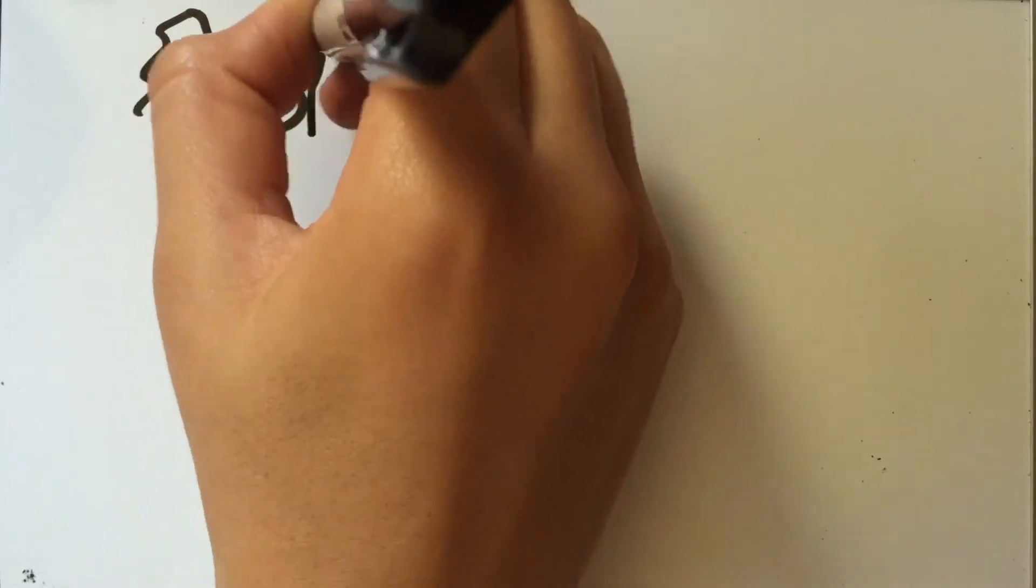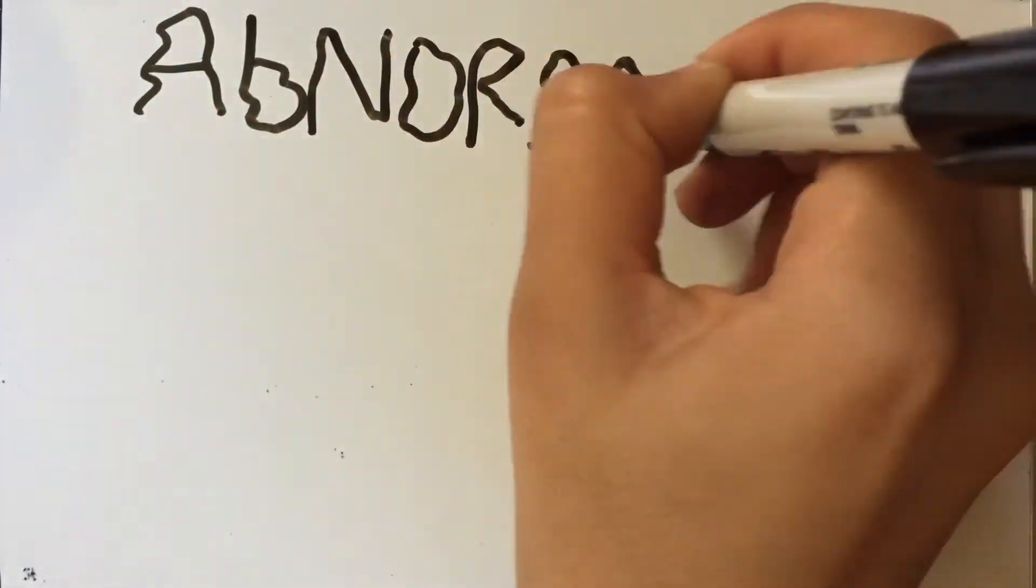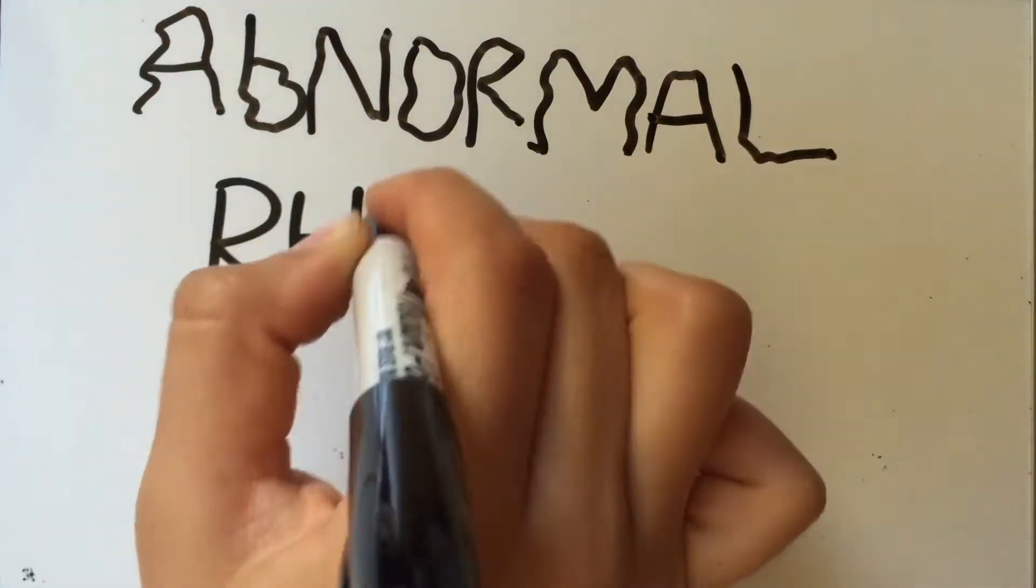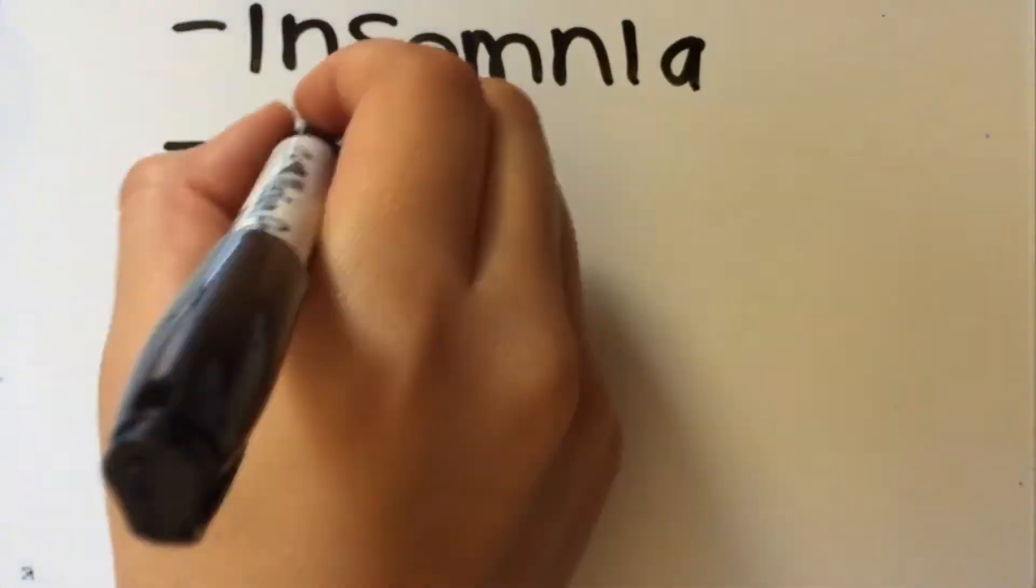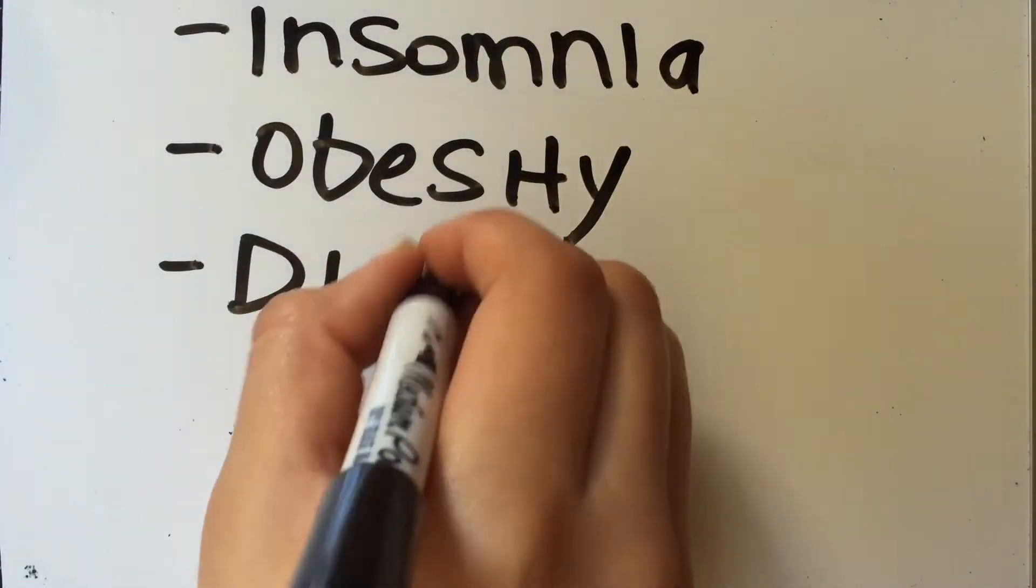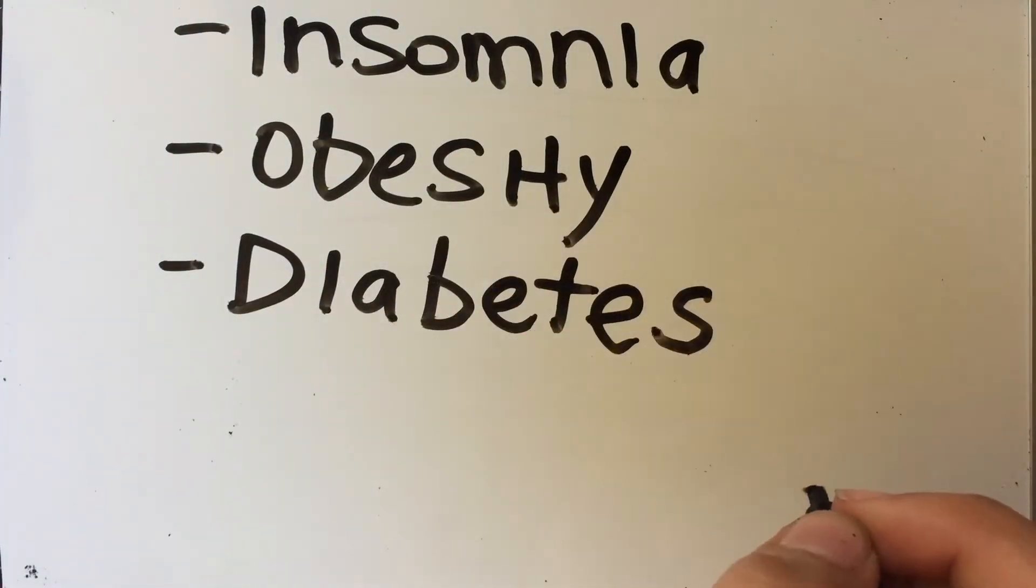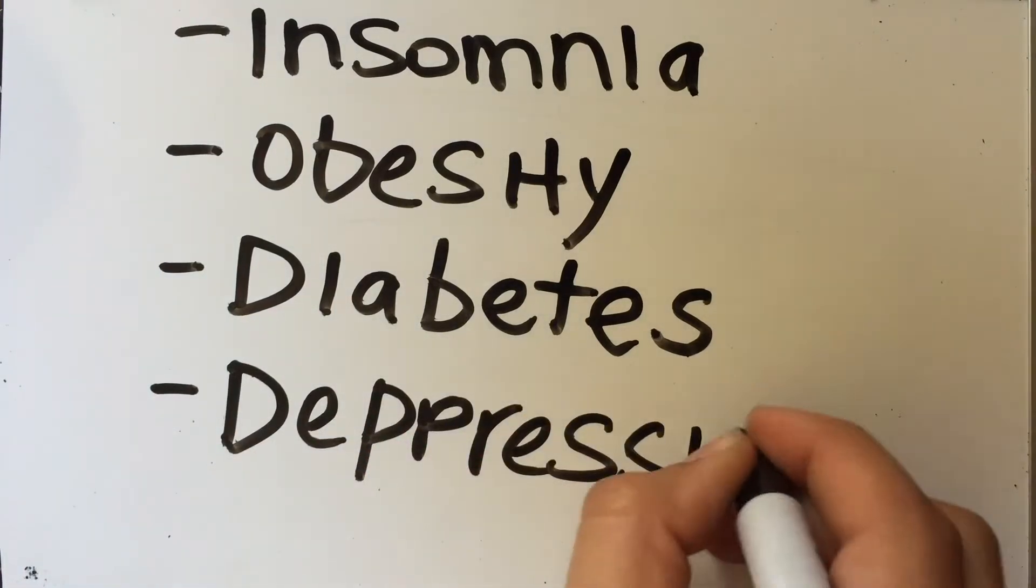The understanding of these cycles is very important because the alteration or abnormality of circadian clocks can be associated with insomnia, obesity, diabetes, depression, or other disorders.